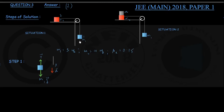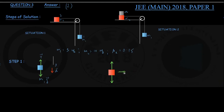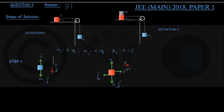Similarly, we draw the FBD for block 2 of mass m2. The forces are: the force of gravity acting vertically downwards, the normal force given by the tabletop vertically upwards, the force of tension given by the string horizontally rightwards, and the force of kinetic friction acting at the bottom horizontally leftwards to resist the motion. The acceleration of both blocks must be the same magnitude A — block 2 accelerates rightward. The forces are m2g, normal force N, tension T, and kinetic friction Fk.